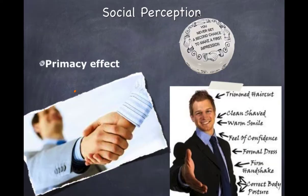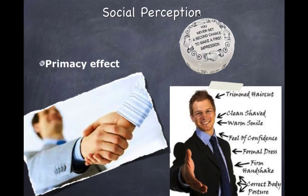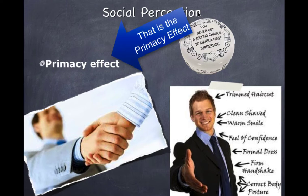The process we use to obtain critically important social information about others is called social perception. A key ingredient to that is the primacy effect — the tendency of an overall impression to be influenced more by our first information received than by any information that comes after. Essentially, our first impression has a powerful impact on our overall impression of somebody. Information consistent with the first impression is often accepted and strengthens it, while inconsistent information is usually disregarded.